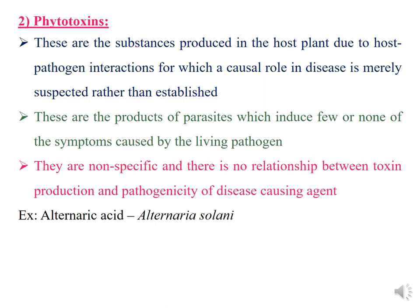Coming to the second category: phytotoxins. Phytotoxins are substances produced in the host plant due to host-pathogen interactions, for which a causal role of the toxin in disease is merely suspected rather than established. In pathotoxins, the toxin's role is already established; in phytotoxins, we suspect the toxin may be responsible for the disease but it is not yet confirmed. Phytotoxins are products of parasites which induce few or none of the symptoms caused by the living pathogen. They are non-specific, and there is no standard relationship between toxin production and pathogenicity.